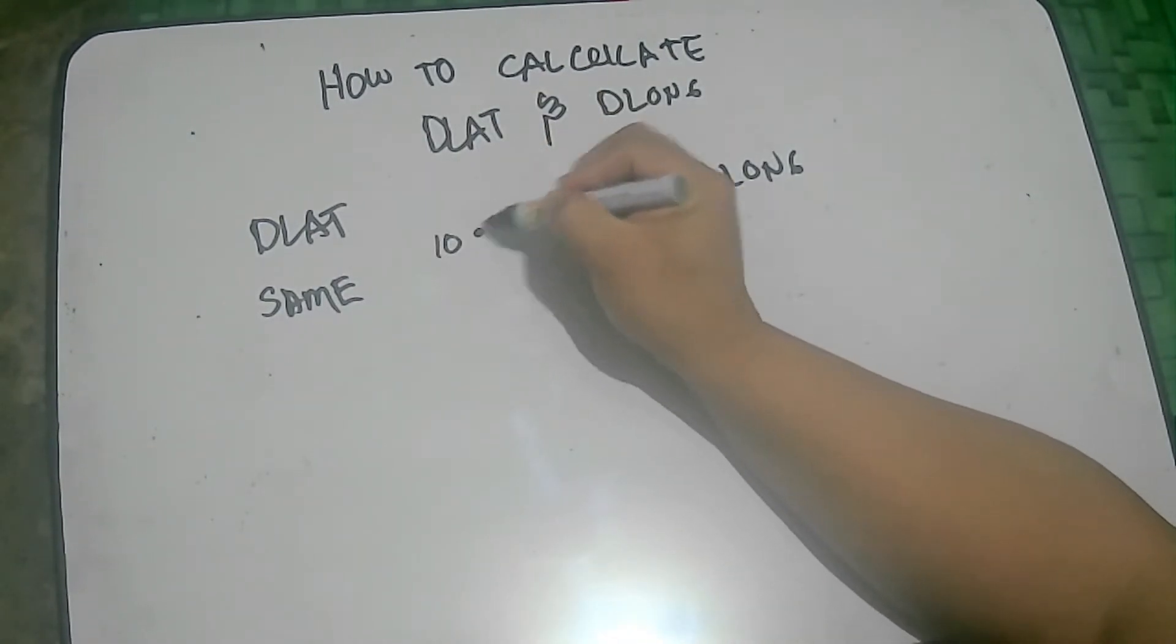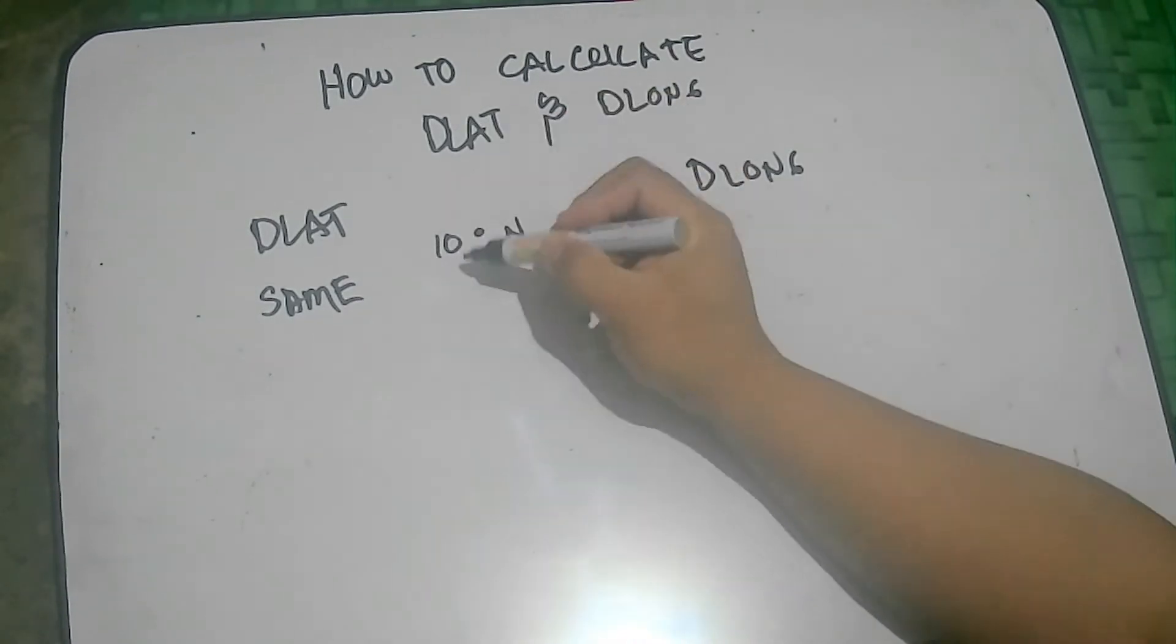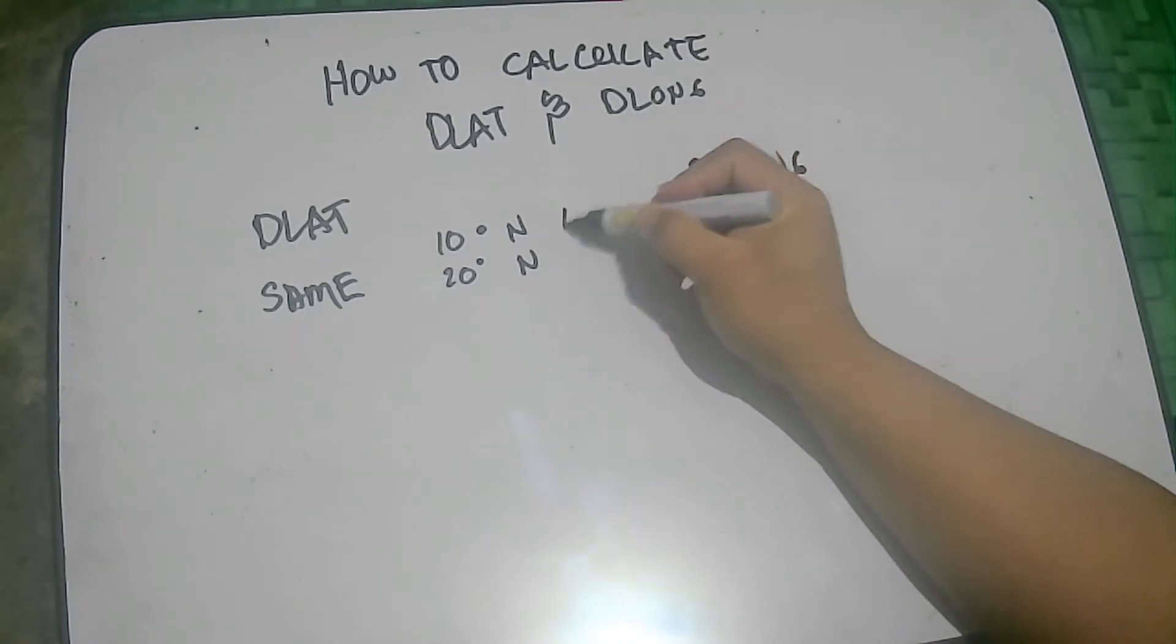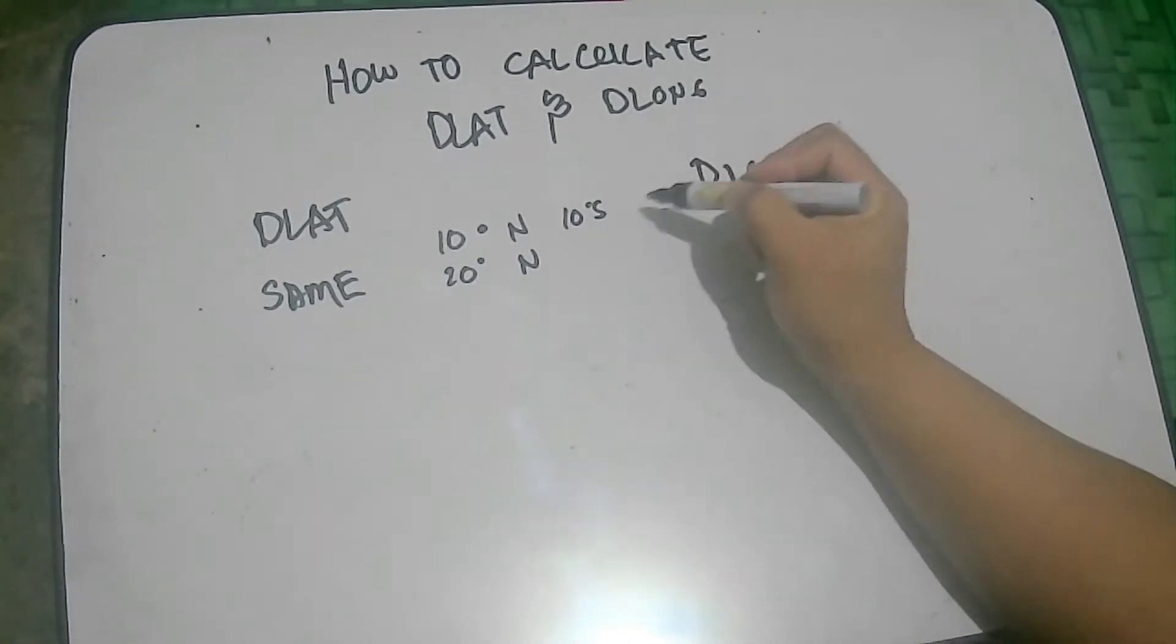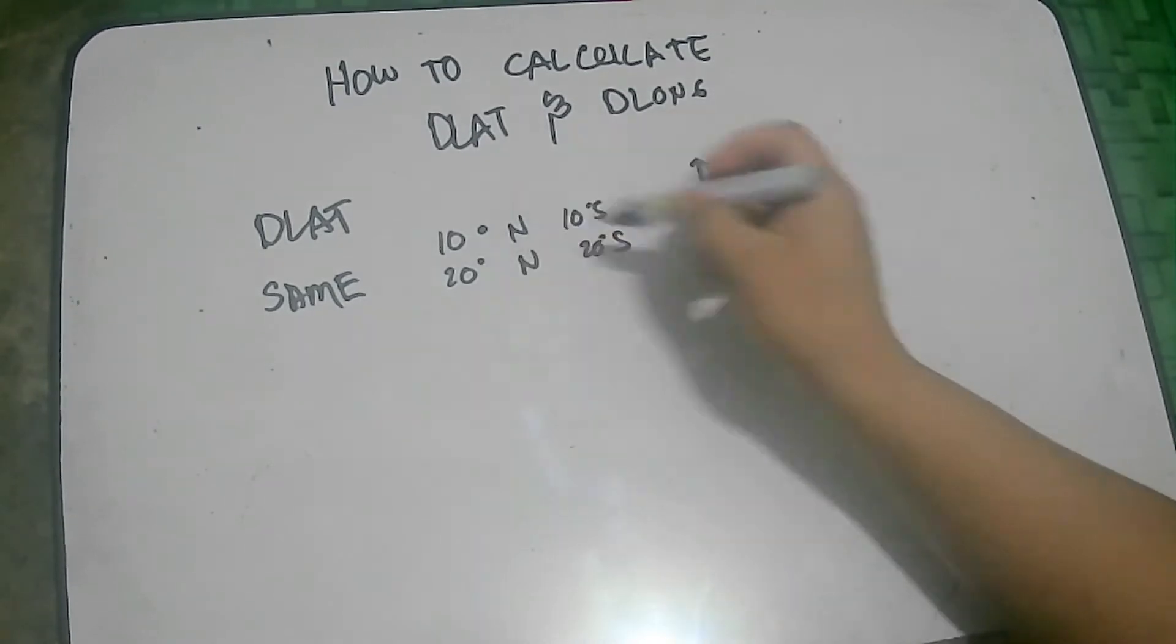for example, 10 degrees north and 20 degrees north. Okay, pareha sila or it's either 10 degrees south, for example, or 20 degrees south. Okay, for example, so what to do here is to subtract. Okay, minus natin yan.